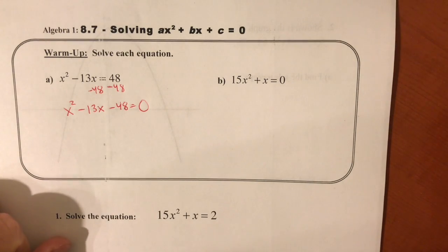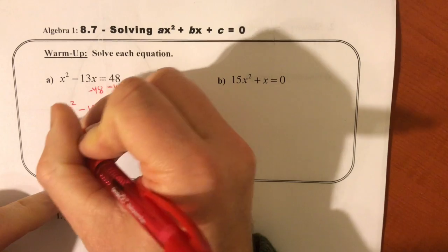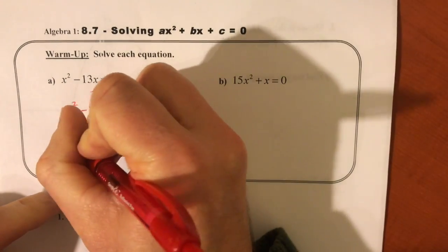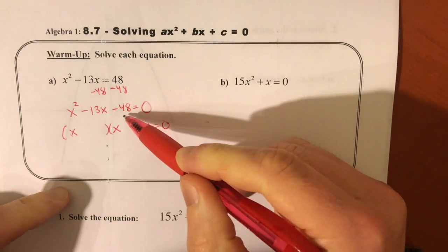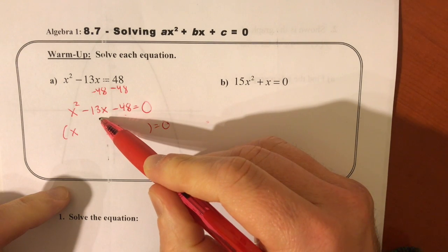Now we're going to try to solve this by factoring. There's no GCF, it's a trinomial, it starts with x squared. I'm going to unfoil this, x and x, and I'm looking for two numbers that multiply to be negative 48 and add up to negative 13.